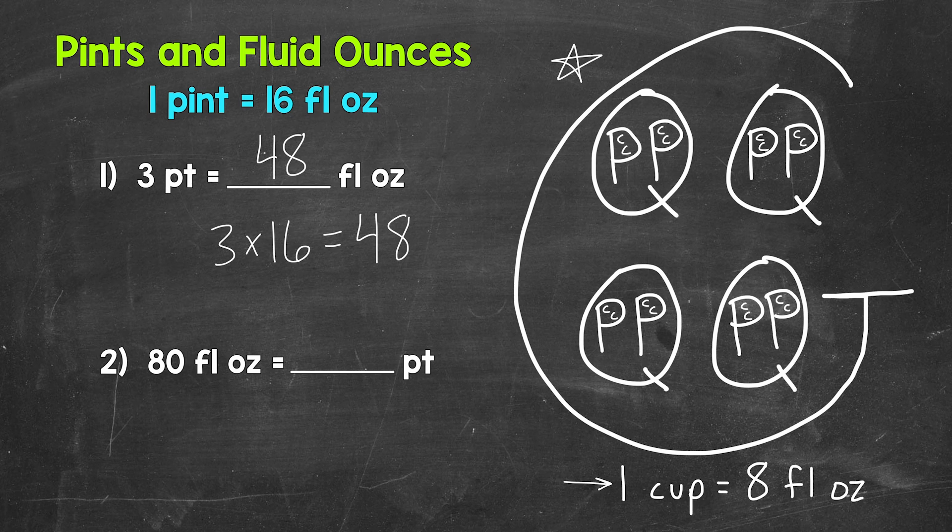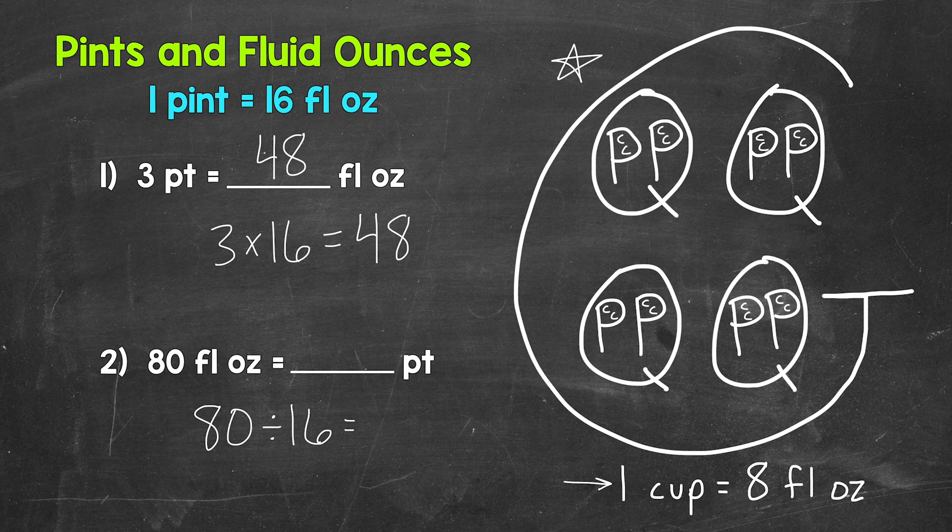We need to divide here. We need to do 80 divided by 16. So when we go from fluid ounces to pints, we divide by 16.